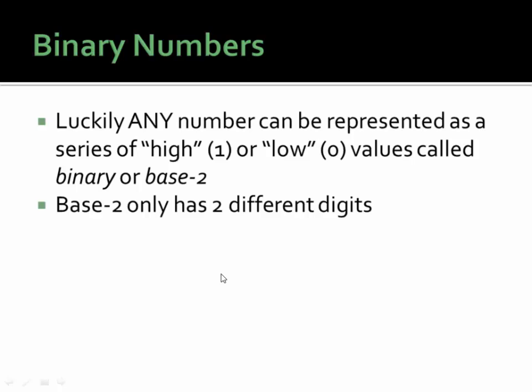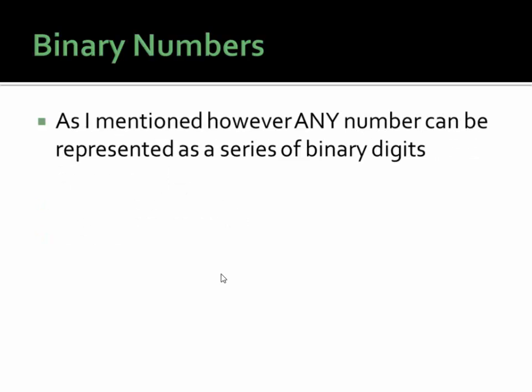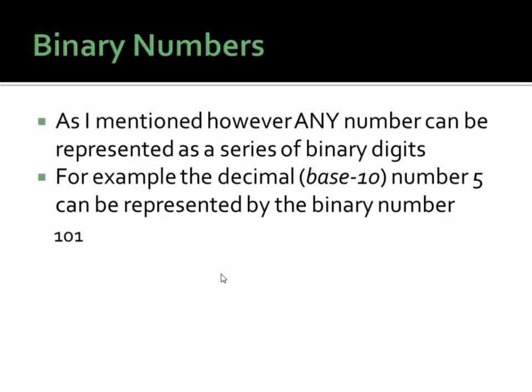Base two only has two different digits: one and zero. But as I mentioned before, any number can be represented as a series of binary digits. For example, the decimal or base ten number five can be represented by the binary number one zero one.